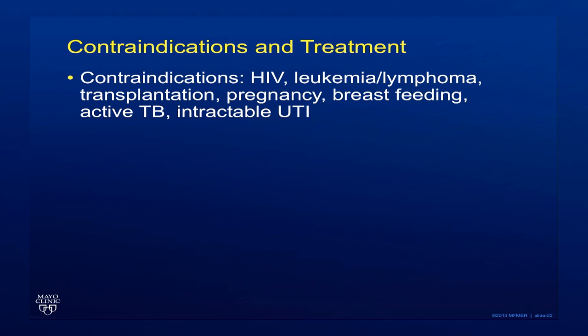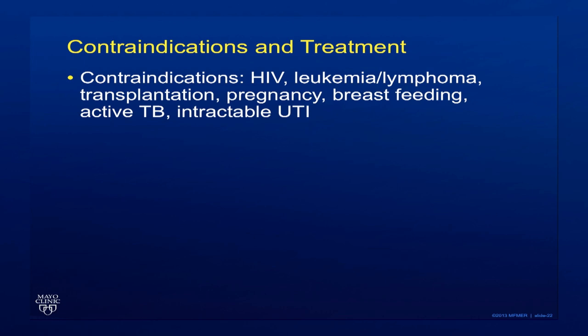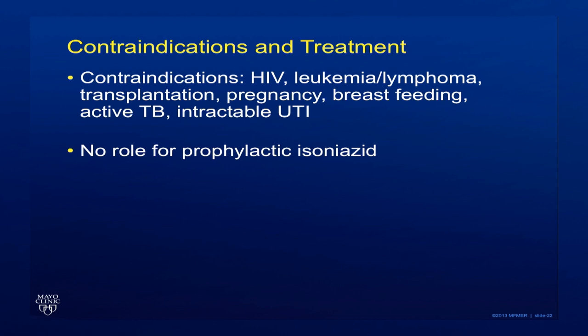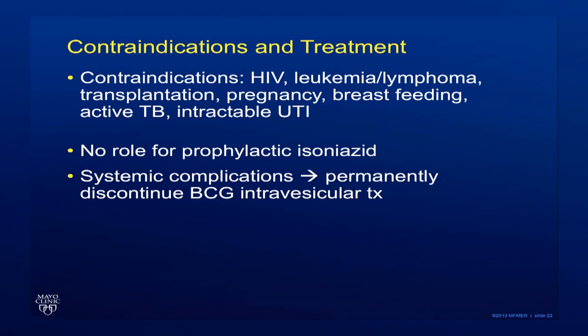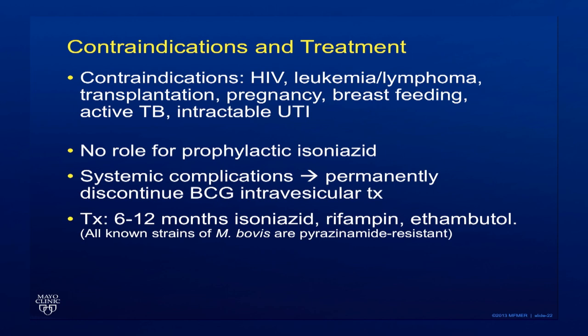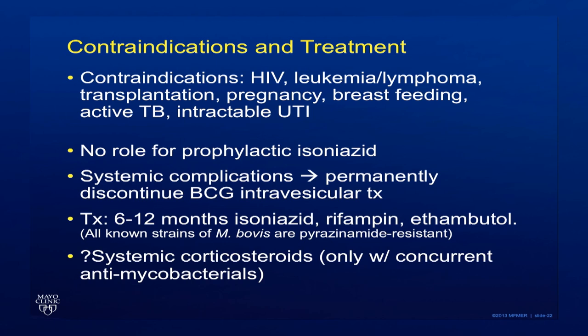There are some relative or absolute contraindications to intravesicular treatment, because they would either increase the risk of complications or cause problems such as with pregnancy or breastfeeding. There's no role for prophylactically treating the patient with isoniazid to prevent spread of BCG. But if there are systemic complications, it's recommended that BCG treatment is suspended and then the patient is treated with systemic medications — isoniazid, rifampin, and ethambutol — for 6 to 12 months. All strains of Mycobacterium bovis are pyrazinamide resistant, so this drug is not used. There might be a role for systemic corticosteroids, but only if triple drug therapy is used at the same time.